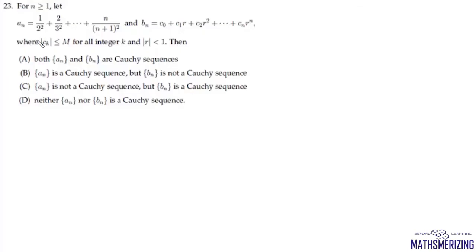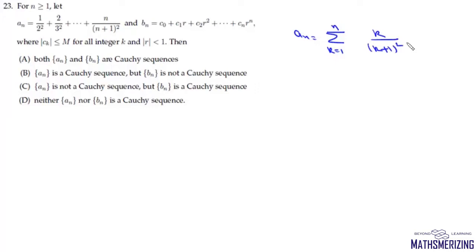The question gives us two sequences Aₙ and Bₙ. Aₙ is defined as the summation where k varies from 1 to n of k/(k+1)². What we will do is add and subtract 1, and we can write Aₙ as a summation where k varies from 1 to n of 1/(k+1)...